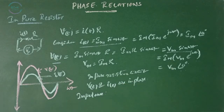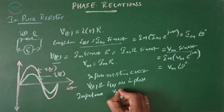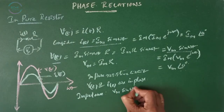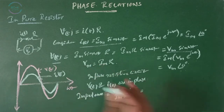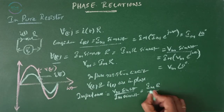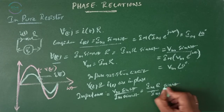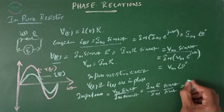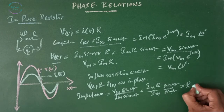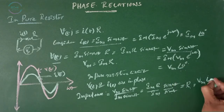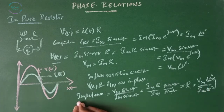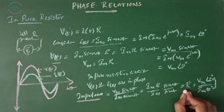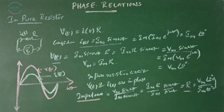Impedance is defined as the ratio of voltage to current: Vm·sin(ωt) divided by Im·sin(ωt). Substituting Vm = Im·R, this simplifies to R. Or simply, Vm∠0 divided by Im∠0 equals R. In a pure resistive network, the impedance is nothing but the magnitude of the resistor.